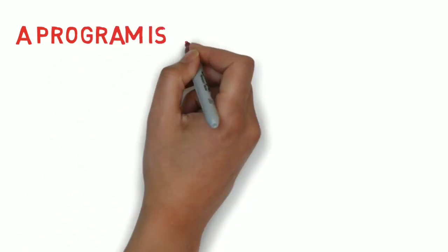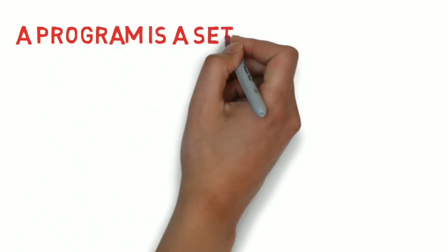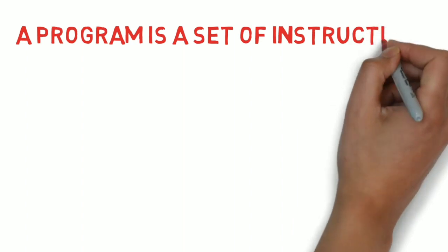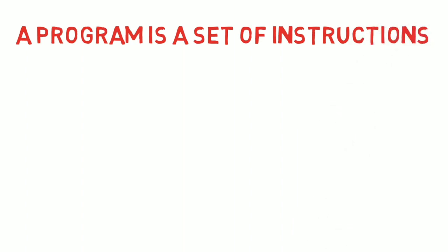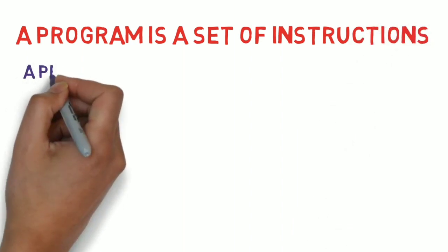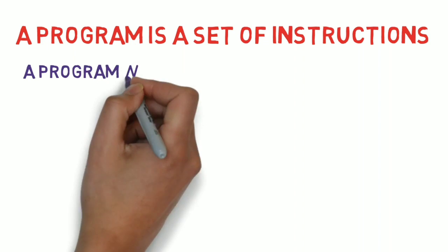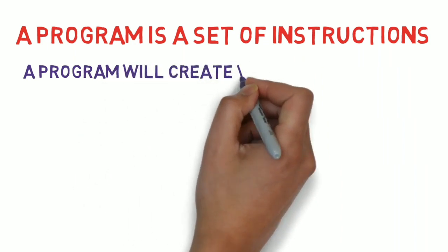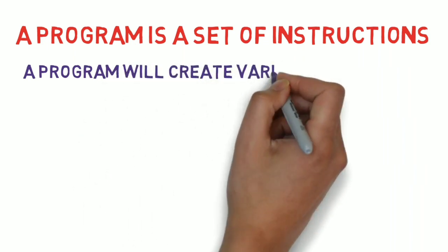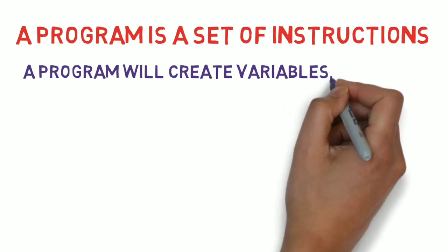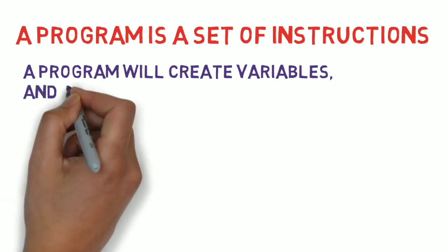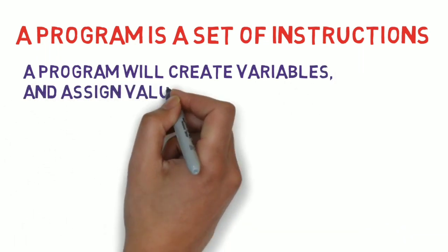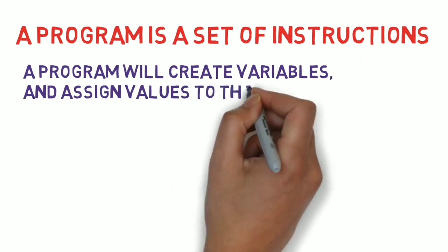A program is a set of instructions. If you remember our cooking analogy, a program is like the recipe that is followed to get from the input to the output. A program will create variables and assign values to them. Variables are like containers in which you can keep values.